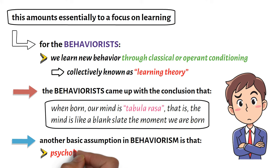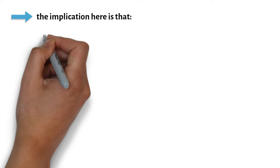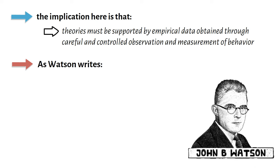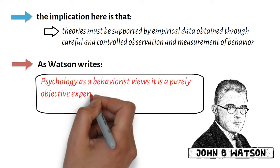Another basic assumption in behaviorism is that psychology should be viewed as a science. The implication here is that theories must be supported by empirical data obtained through careful and controlled observation and measurement of behavior. As Watson writes, 'Psychology as a behaviorist views it is a purely objective experimental branch of natural science.'